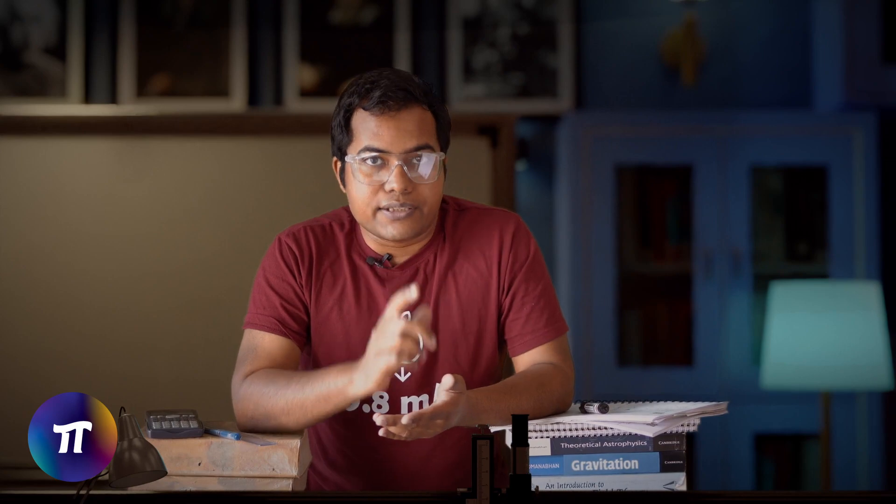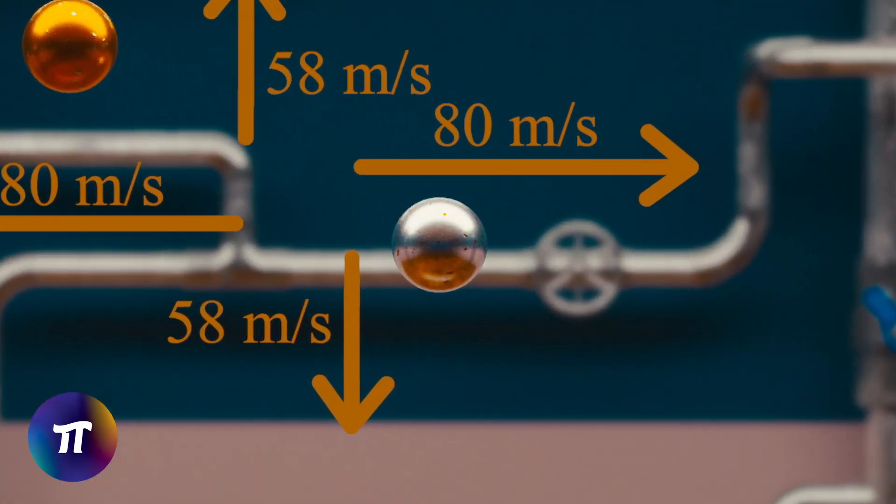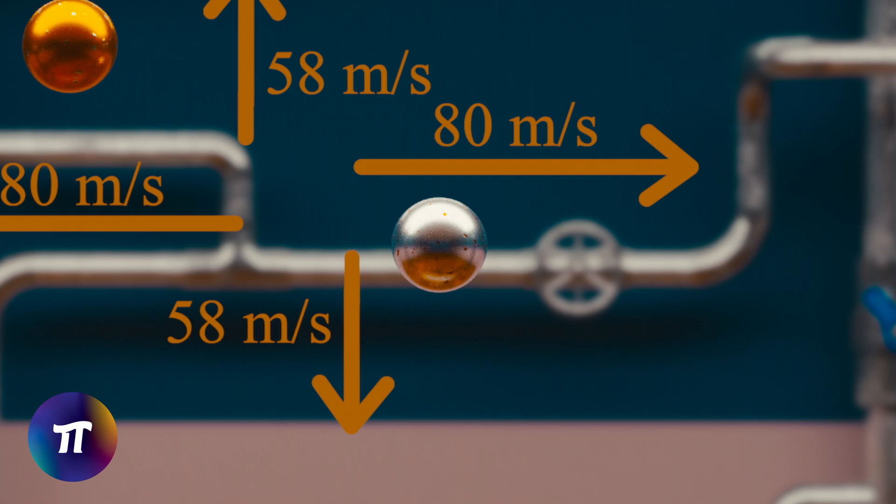After the collision, the iron ball is moving at 80 meter per second in the x direction and 58 meter per second in the negative y direction. The copper ball on the other hand is moving at 80 meter per second in the negative x direction and 58 meter per second in the negative y direction.